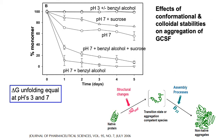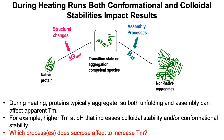Looking at the protein monomer loss as a function of time at pH 7, sucrose slightly inhibited that. The important observation was benzyl alcohol greatly accelerated aggregation and loss of monomer at pH 7. The reason for this is that benzyl alcohol causes a partial unfolding of the protein, which then fosters a high level of aggregation. This can be partially blocked by sucrose, which inhibits some of the unfolding. But at pH 3, in the presence or absence of benzyl alcohol, the protein doesn't aggregate at all, because the protein is highly charged at pH 3. Benzyl alcohol will perturb protein structure at pH 3, but the high charge inhibits aggregation.